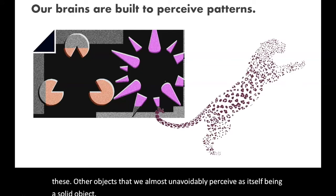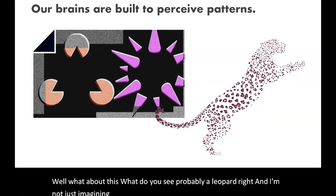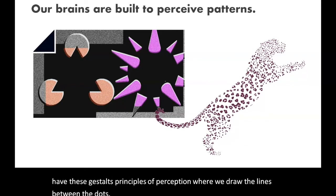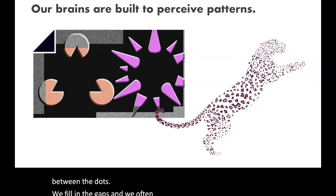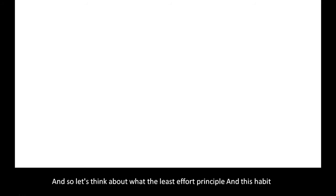Or what about this — what do you see? Probably a leopard. We have these gestalt principles of perception where we draw lines between the dots, fill in the gaps, and often see patterns where there's really not enough evidence to fully make that inference. So let's think about how the least effort principle and our brain's habit of making patterns applies to social situations.